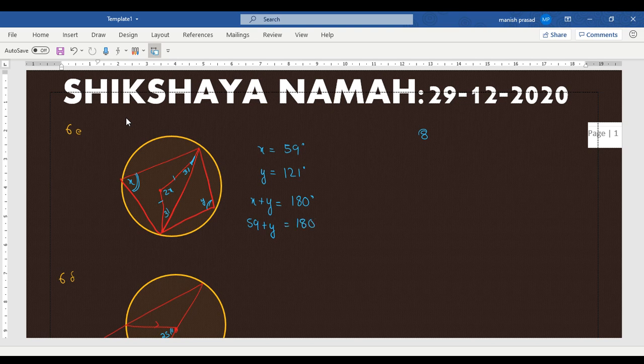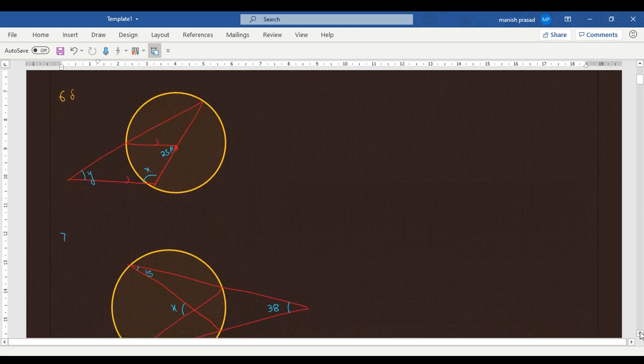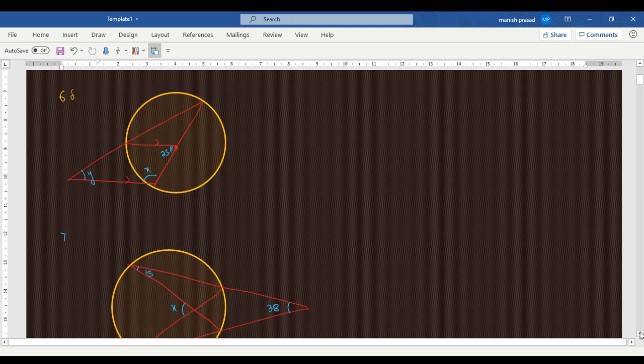Perfect. Now let's go to the next one, 6f. Okay, this is the question. We already have this line is parallel to this line. The angle at the center is 25. We have to find x and y. X is 155 degrees. X equals 155. Okay.